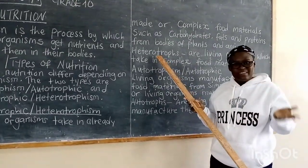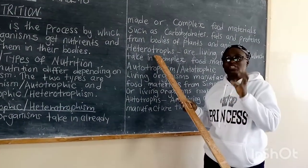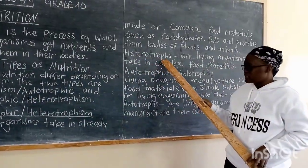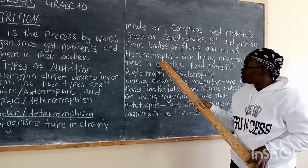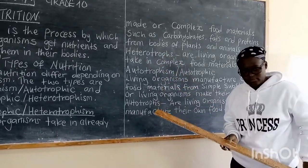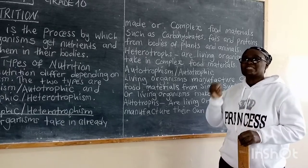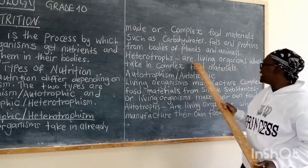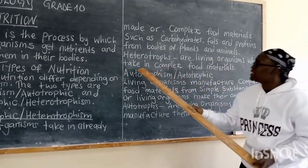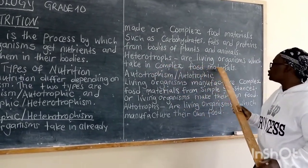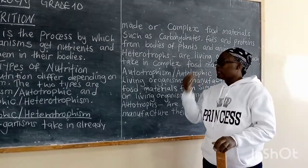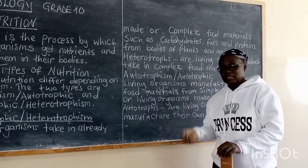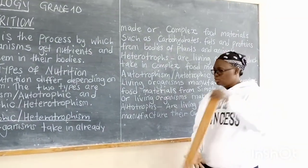What do we call these living organisms that eat food that has already been made? These are heterotrophs. There is a difference between heterotrophs and heterotrophism. Heterotrophism is a way of obtaining food, but heterotrophs are living organisms which take in complex food materials — like human beings, who take in food that has already been made by plants.